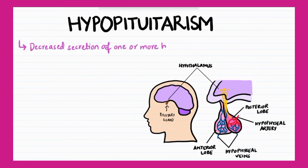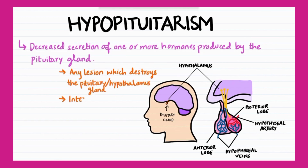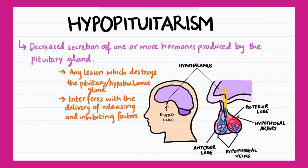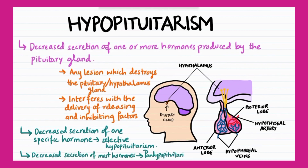Hypopituitarism is defined as decreased secretion of one or more hormones produced by the pituitary gland. This could occur due to any lesion which destroys the pituitary gland or hypothalamus, or which interferes with the delivery of releasing and inhibiting factors. There could be decreased secretion of one specific hormone, called selective hypopituitarism, or decreased secretion of most or all hormones, referred to as panhypopituitarism.